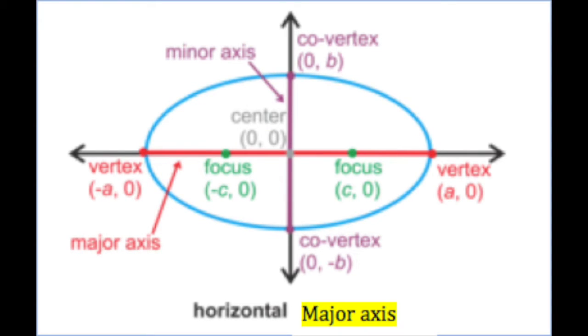The major axis of an ellipse is the longer axis, where a and c are placed. The minor axis, or shorter axis, is where b is found.